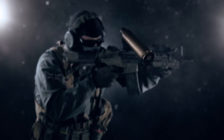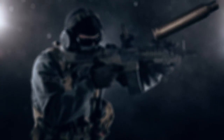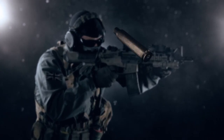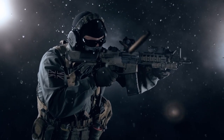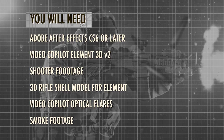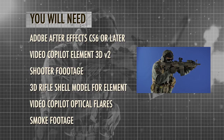Hello and welcome to Independent VFX. I'm Scott Newman and in this tutorial we are going to take a look at how you can create a shot like this one using shot footage and Video Copilot Element 3D in After Effects. Before you start there are a few things you'll need: we recommend you run Adobe After Effects CS6 or later with Video Copilot Element version 2 or later installed. If you don't own Element there is a workaround we'll cover in a minute. You will need to download the blue screen shooter footage or shoot your own footage to work with.